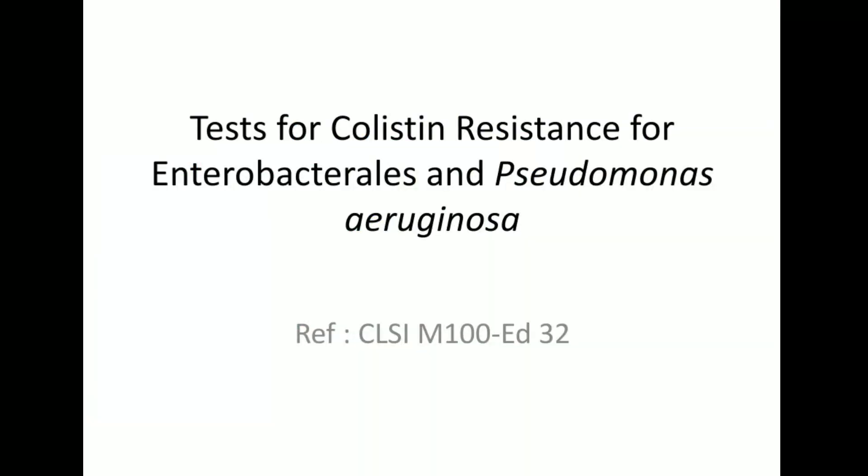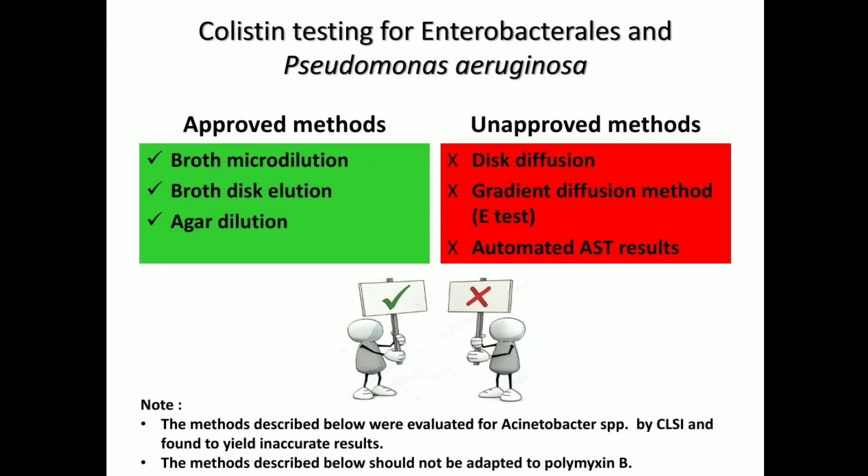In this video, we will be discussing the methods of colistin testing in accordance with the CLSI M100 document of 2022. The only recommended methods of colistin testing are the broth micro dilution, broth disc elution test, and agar dilution test. Unapproved methods are disc diffusion, e-test, or automated AST results.